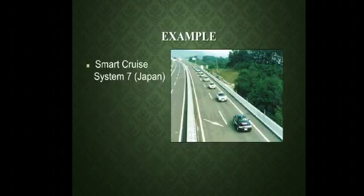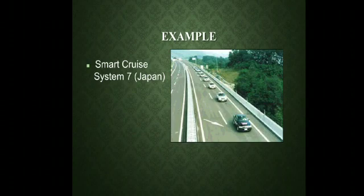One example used today in Japan is called the Smart Cruise System 7. In this system, as seen in the diagram, vehicles maintain a specific distance from each other. They travel on the highway in such a manner that they keep a specific distance between them, which prevents accidents. This concept was first used in Japan.